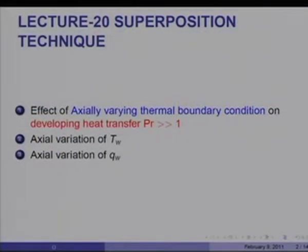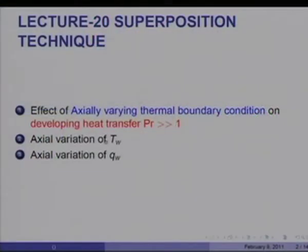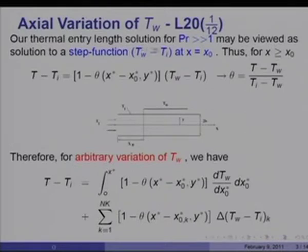Today I will take up the last lecture on laminar flow heat transfer in ducts, and what I am going to consider is the effect of axially varying thermal boundary condition. This is particularly of interest in oil flows where the Prandtl number is very large and the thermal development length is considerably bigger than the velocity development length. In such situations, the axially varying wall temperature as well as axially varying heat flux have a profound effect on how the heat transfer coefficient varies with axial distance. Let us consider the solution obtained for Prandtl number very much greater than 1.